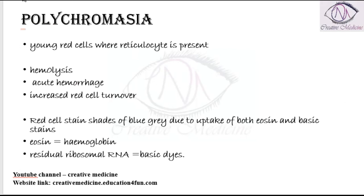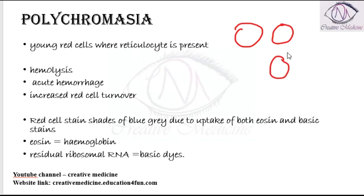Polychromasia — these are younger cells. In polychromasia, you will see that the red cells are actually younger and their reticulocytes are present in the red cells. So these younger cells with reticulocytes are called polychromasia.